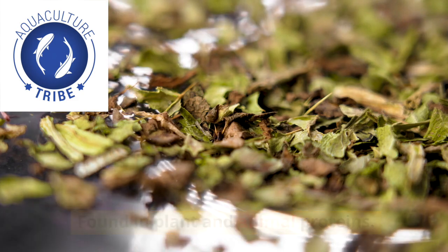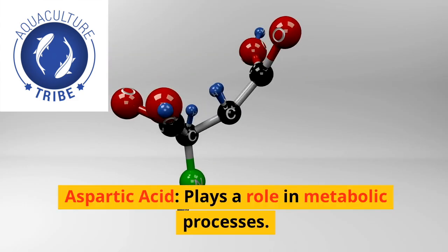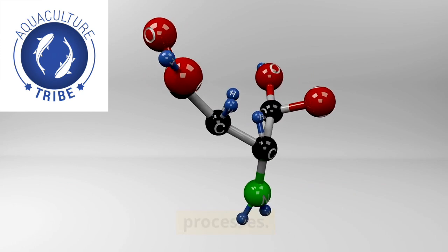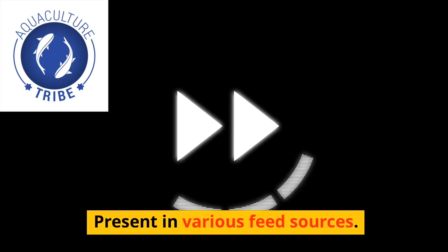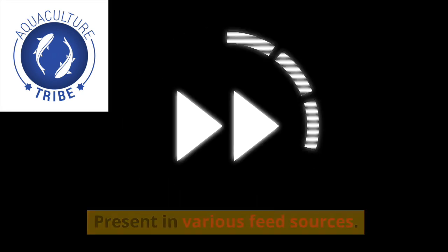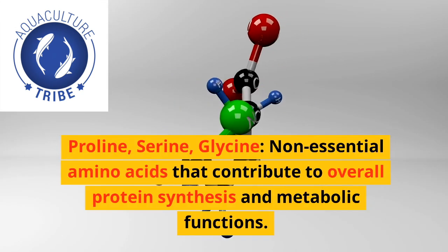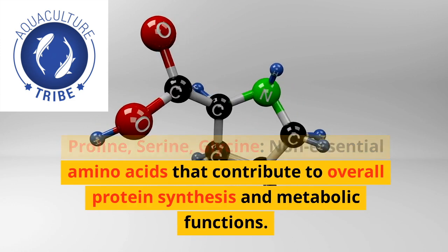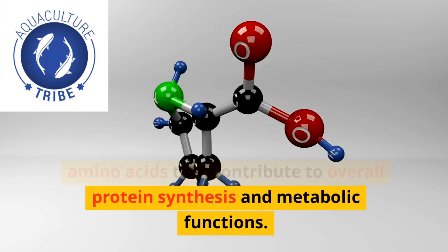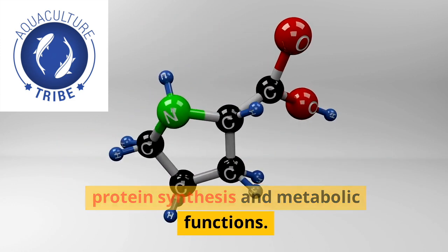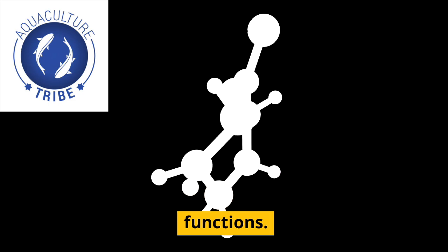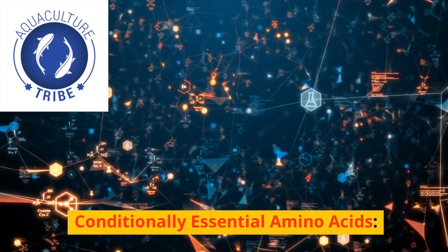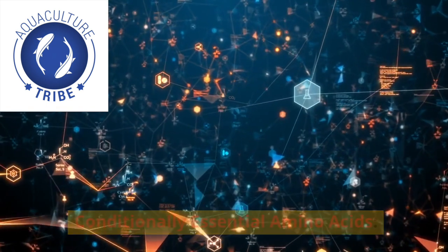Arginine is important for growth, reproduction, and overall fish health, found in plant and animal proteins. Aspartic acid plays a role in metabolic processes and is present in various feed sources. Proline, serine, and glycine are non-essential amino acids that contribute to overall protein synthesis and metabolic functions.